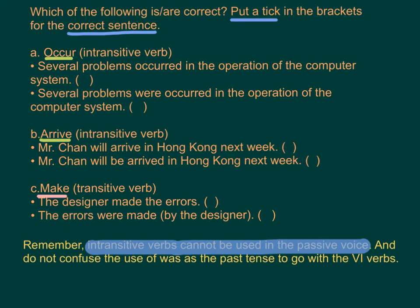Which of the following is or are correct? Put a tick in the brackets for the correct sentence. A) Verb: 'occur' (intransitive). Correct: 'Several problems occurred in the operation of the computer system.' Incorrect: 'Several problems were occurred in the operation of the computer system.'